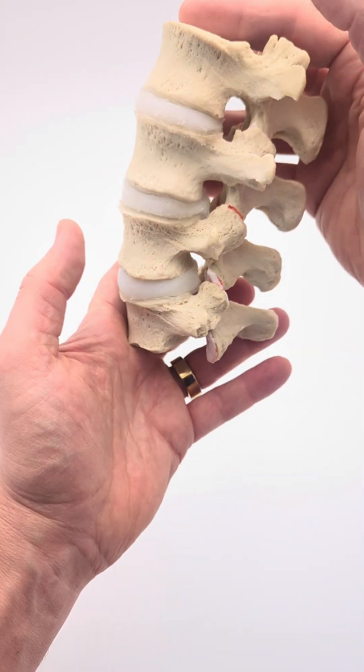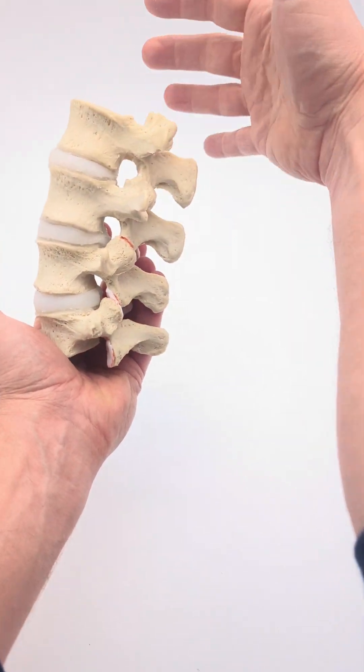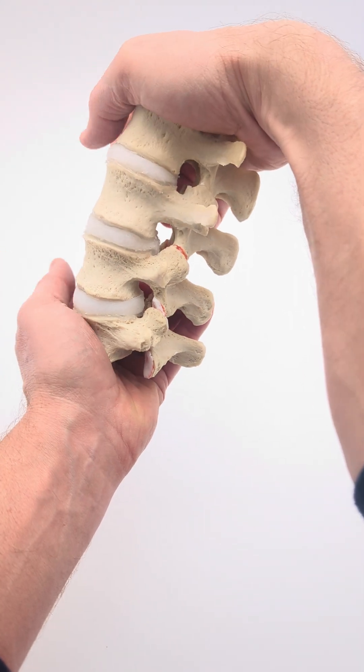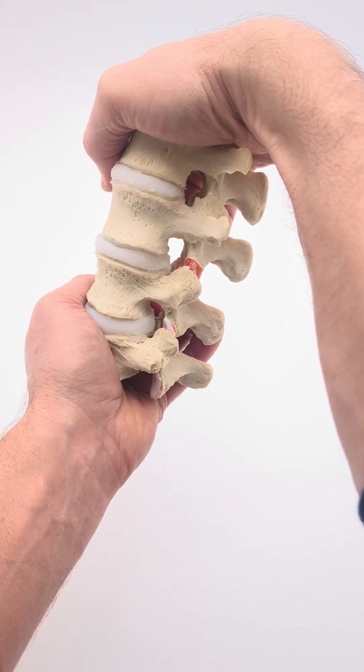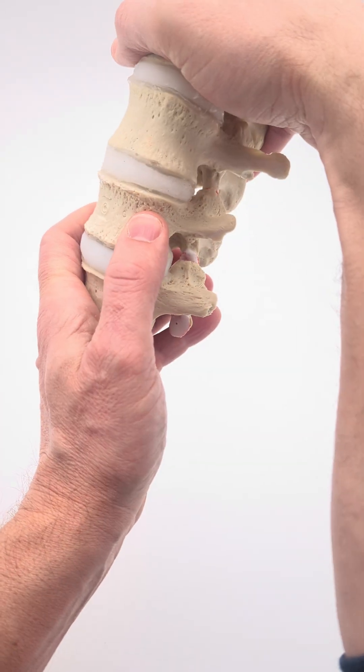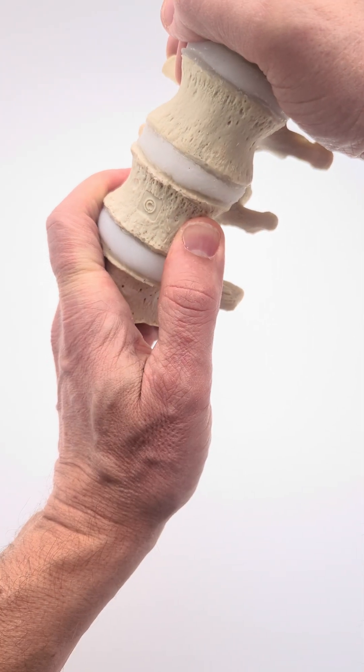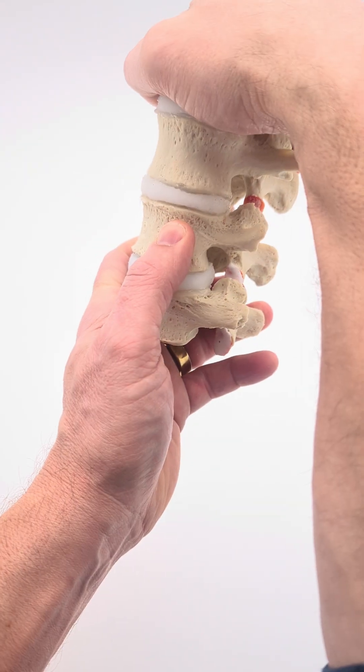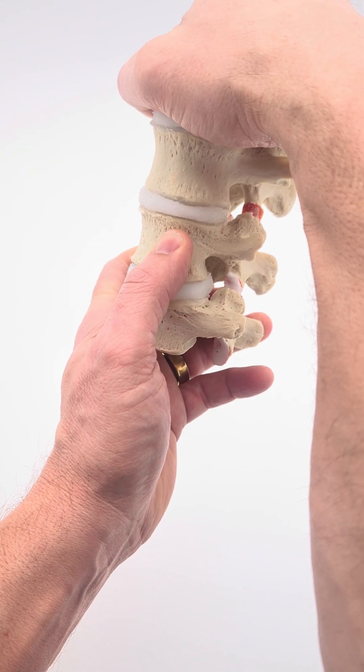Now you can show how, of course, we know with sitting there's a tendency for the spine to go into flexion and with that now you can show the hysteresis, the slow migration and the slow change in the hydraulics of the disc.